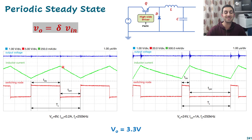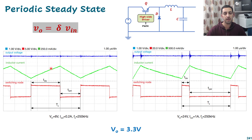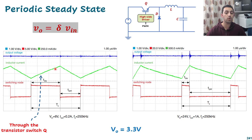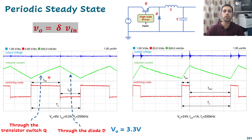The inductor current at steady state shows charging and discharging. During the on time, we are charging that inductor because the switch is on and shorted, so all the current is pushed into the inductor — giving us a rising waveform. During the off time, we are releasing that current through the diode. So the first part of the inductor current flows through the transistor, and during the off time it flows through the diode. This is what we call switched circuits — different current paths over the switching period.